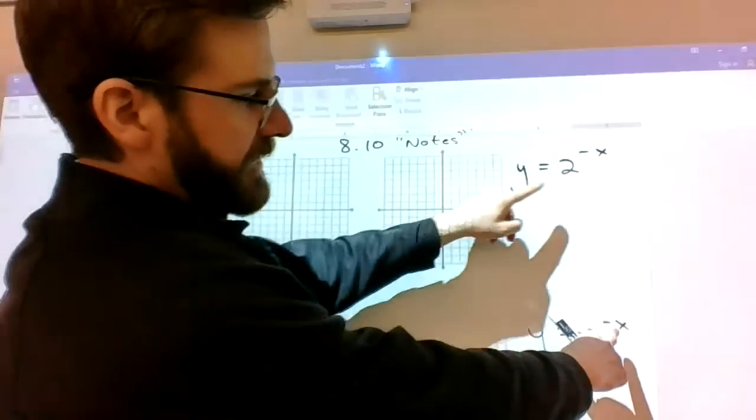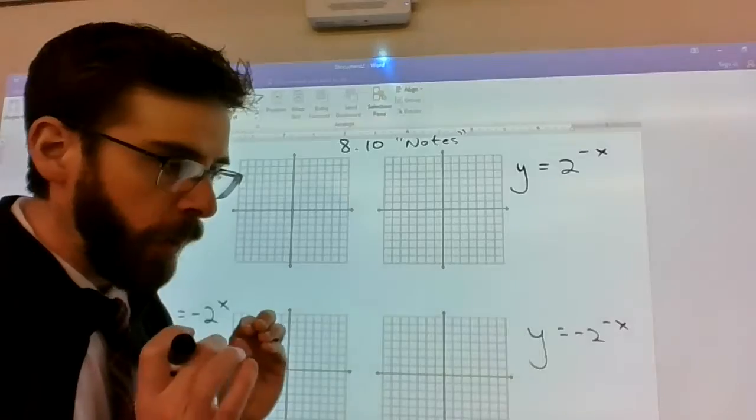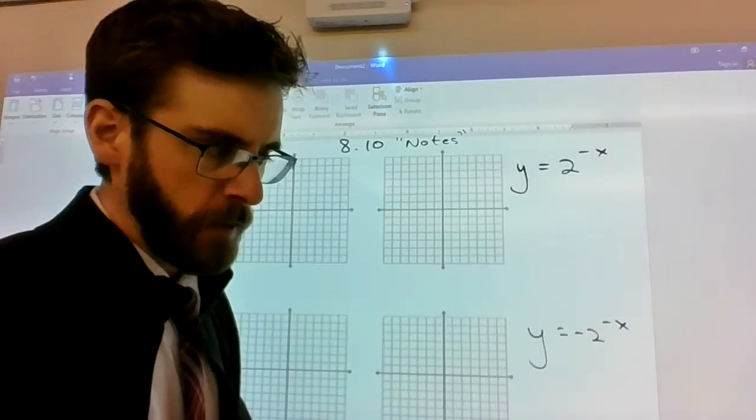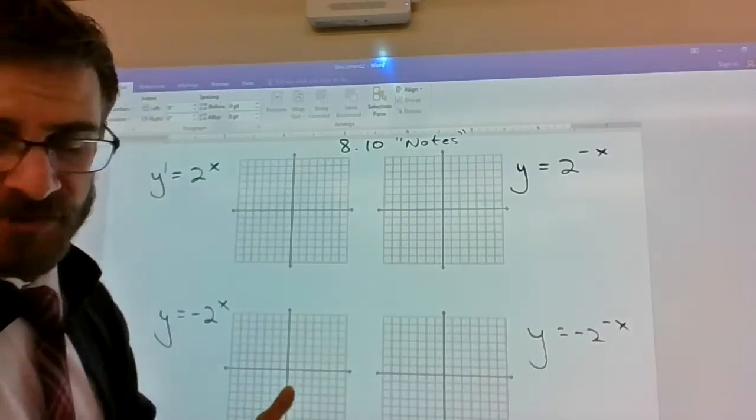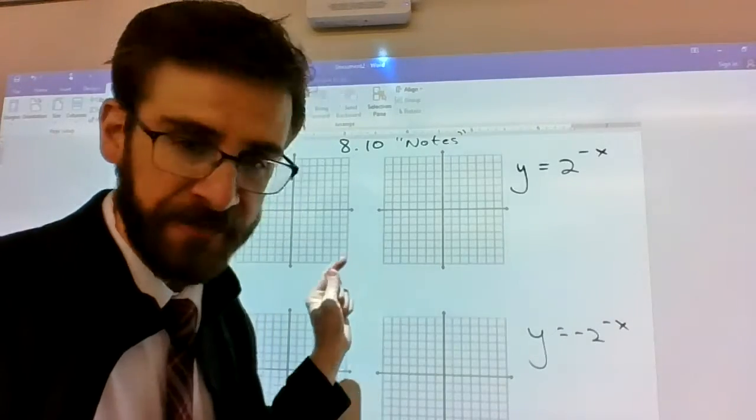Two of them have negatives out front, two of them have negatives for the exponent, and I wanted to get down the visual when you see an equation like this so you can always check yourself intuitively and not just always have to fill in the table.